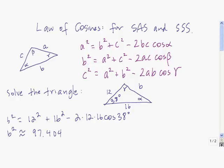To find b, we take the square root. We're going to use the stored value rather than this approximated value, so we take the square root of this answer and we get about 9.87.